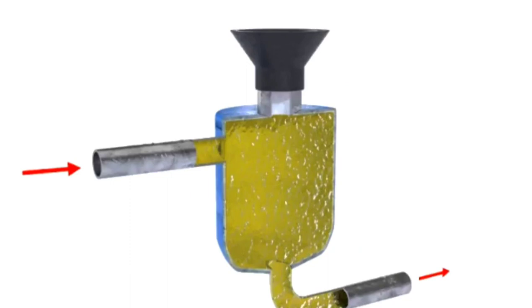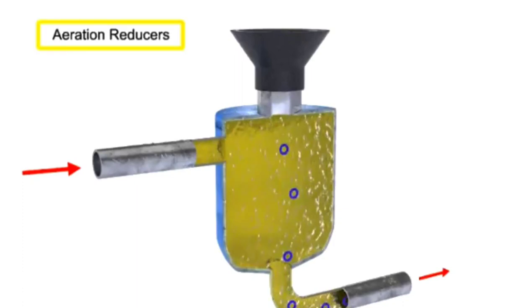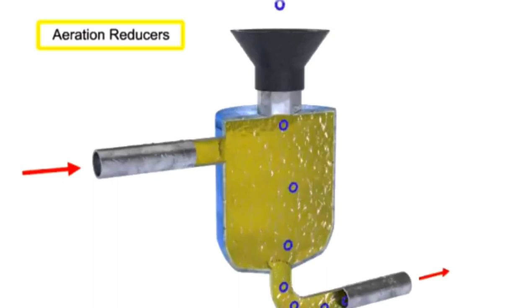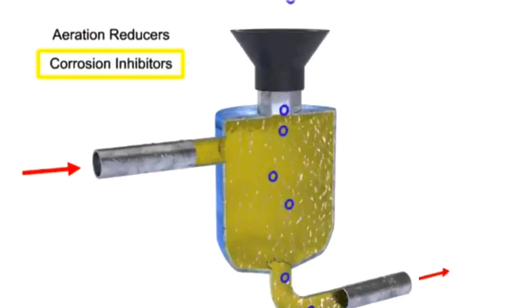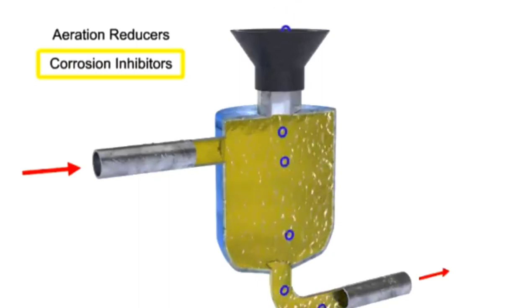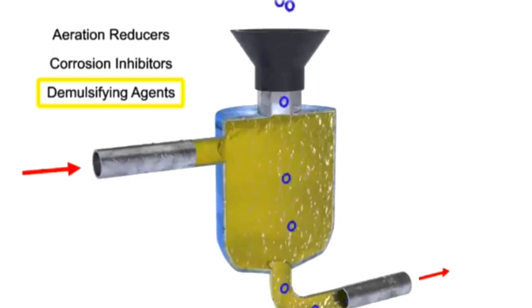Another factor common to hydraulic fluids are the use of additives. Additives can be used to reduce aeration and the production of bubbles as the fluid travels rapidly throughout the system. They can be used to administer corrosion inhibitors within the reservoir, and they can be used as a demulsifying agent, which helps the fluid resist mixing with water.